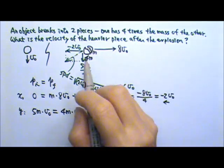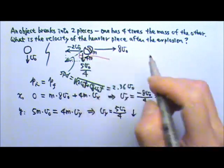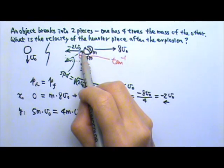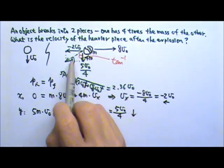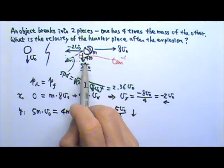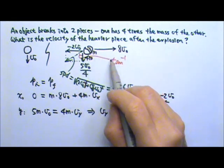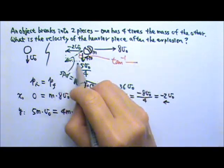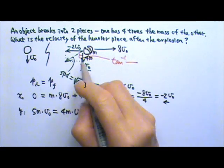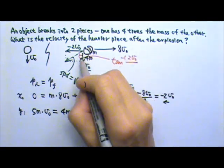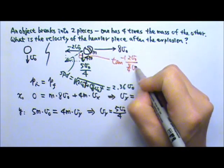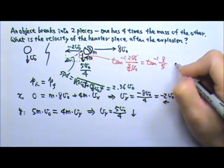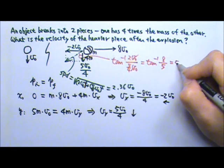If we need an angle to show the direction, we can use inverse tangent. The adjacent side is 5/4 · V0 and the opposite side is 2V0. Since we know the opposite side and adjacent side, we use inverse tan of the opposite over adjacent. The V0's cancel, giving inverse tan of 8/5, which gives us about 58 degrees.